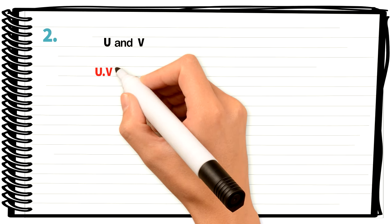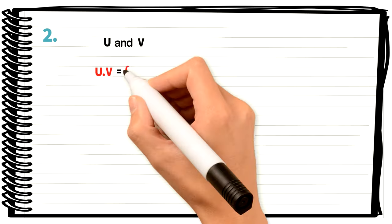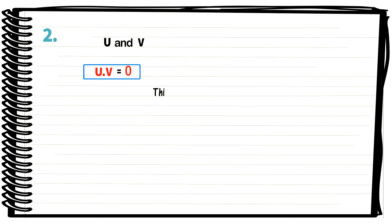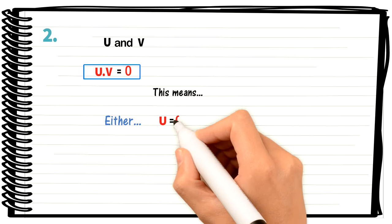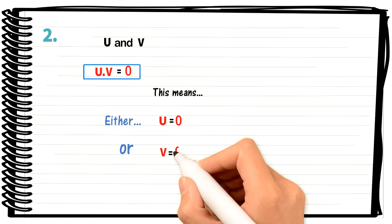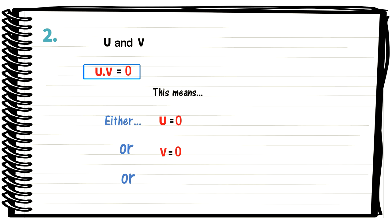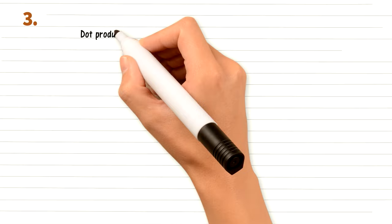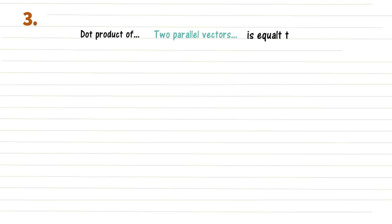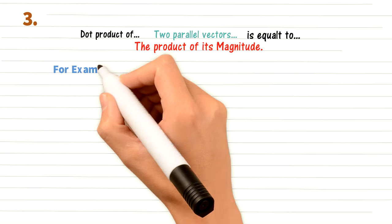The second property: if the dot product of two vectors U and V equals zero, this means either U = 0, or V = 0, or U and V are perpendicular to each other. The dot product of two parallel vectors equals the product of their magnitudes.